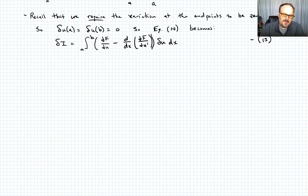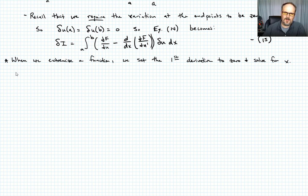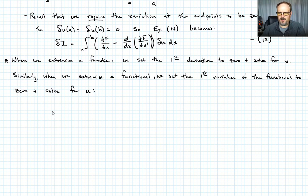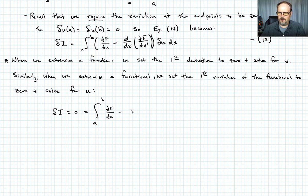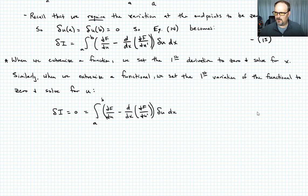Just as we set the first derivative equal to zero to find the extreme value of a function and solve for x, to extremize a functional we set the first variation to zero and solve for u. So we set delta i equal to zero in equation 15, giving: 0 equals the integral from a to b of (partial f/partial u minus d/dx of partial f/partial u prime) times delta u dx — call that equation 16.